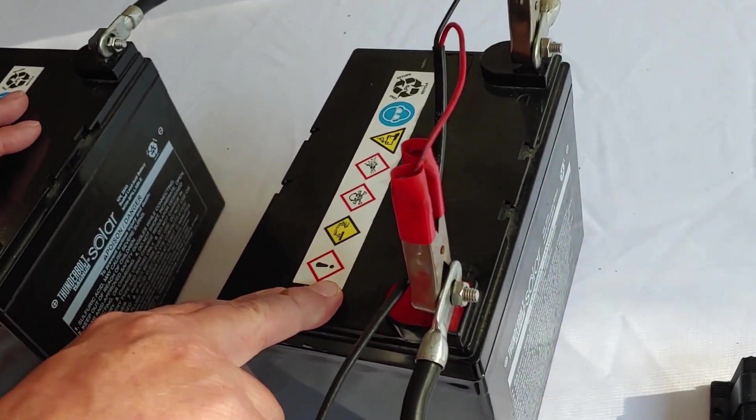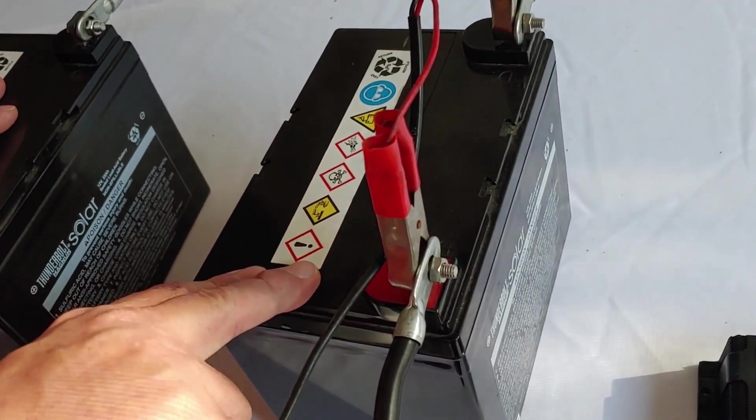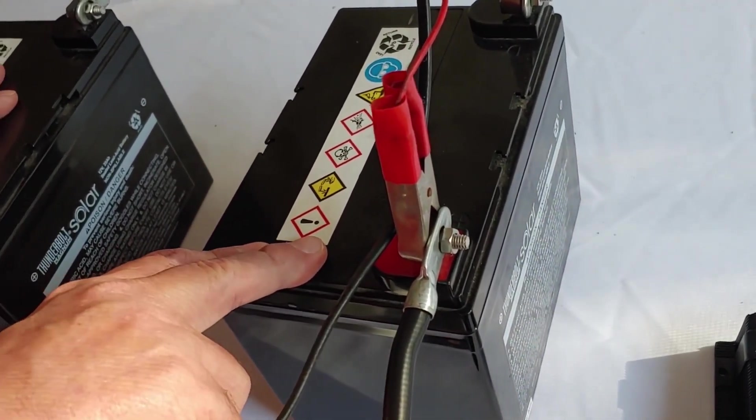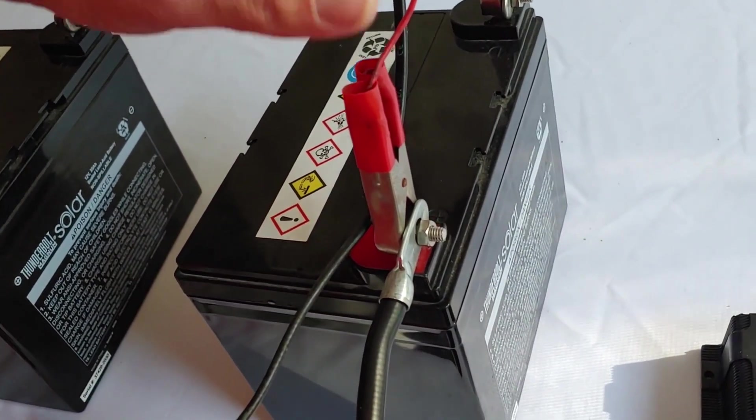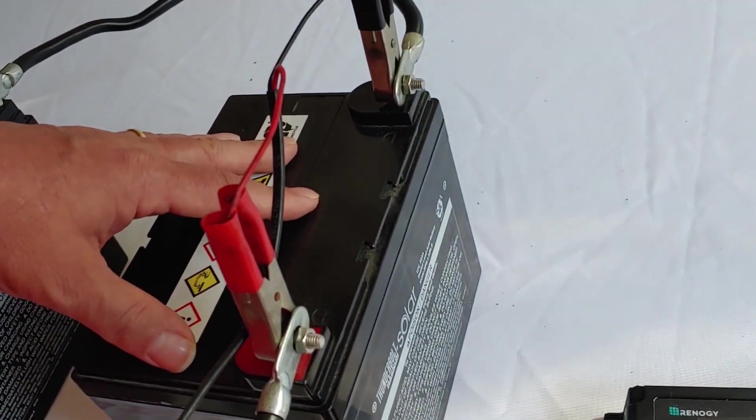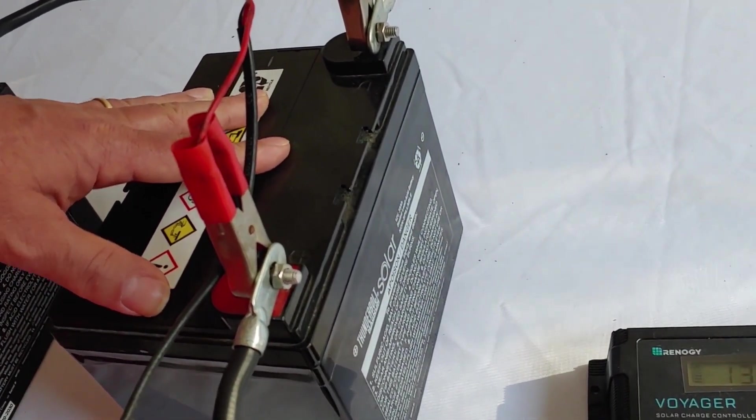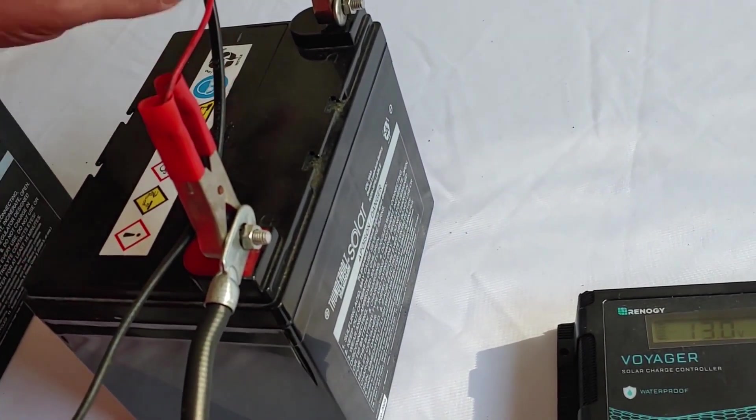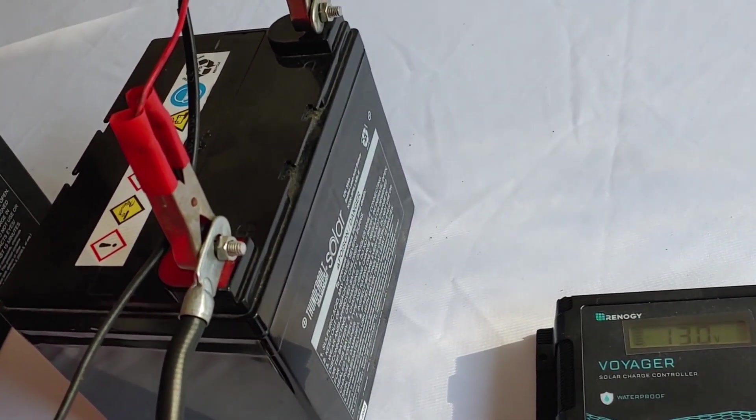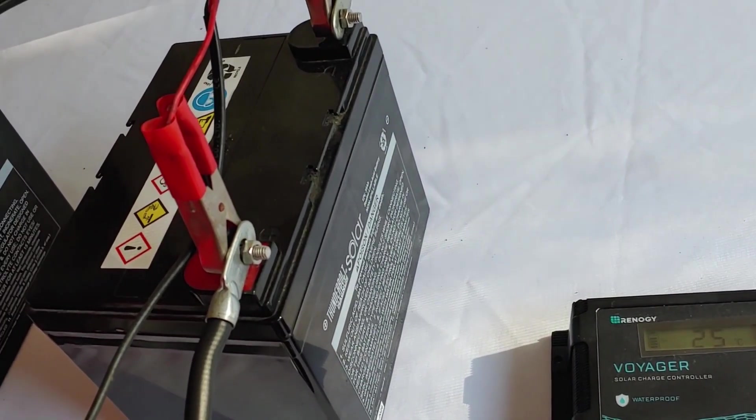So what you want to do is test the equipment yourself. See what works best for you. If this simple way here works best for you, like it does for me, do that. But if you find it works better to move the negative over to the other battery or to the end of your bank, then do that.